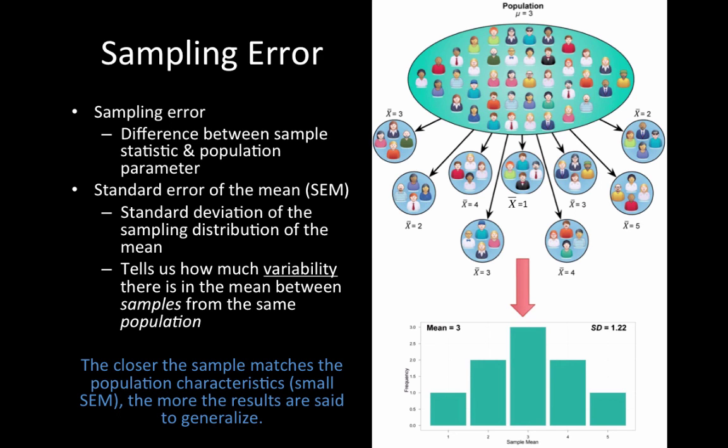If we have smaller standard error and sampling error, the better our sample resembles the population, and the more reliably we can say our sample results are generalizable to the entire population. We'll see more about sampling error in a few weeks.